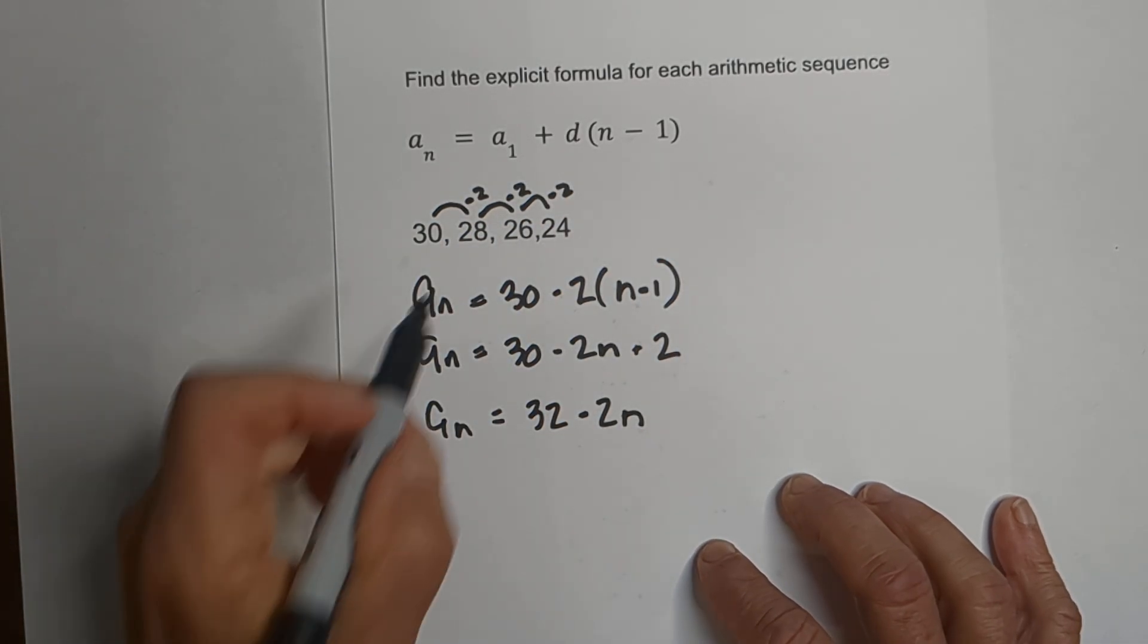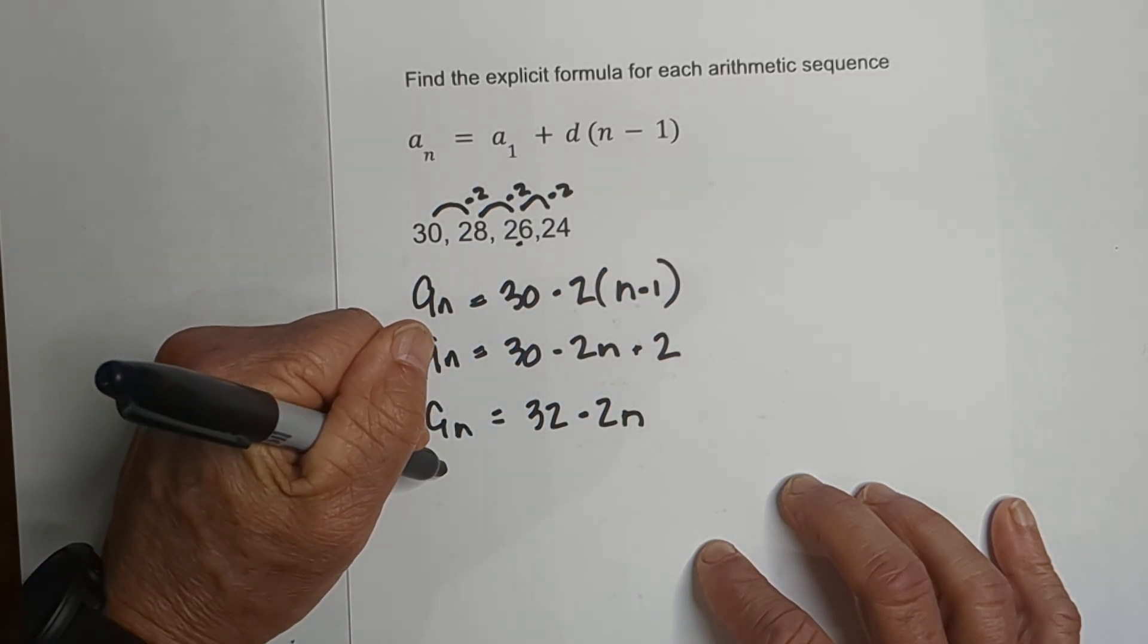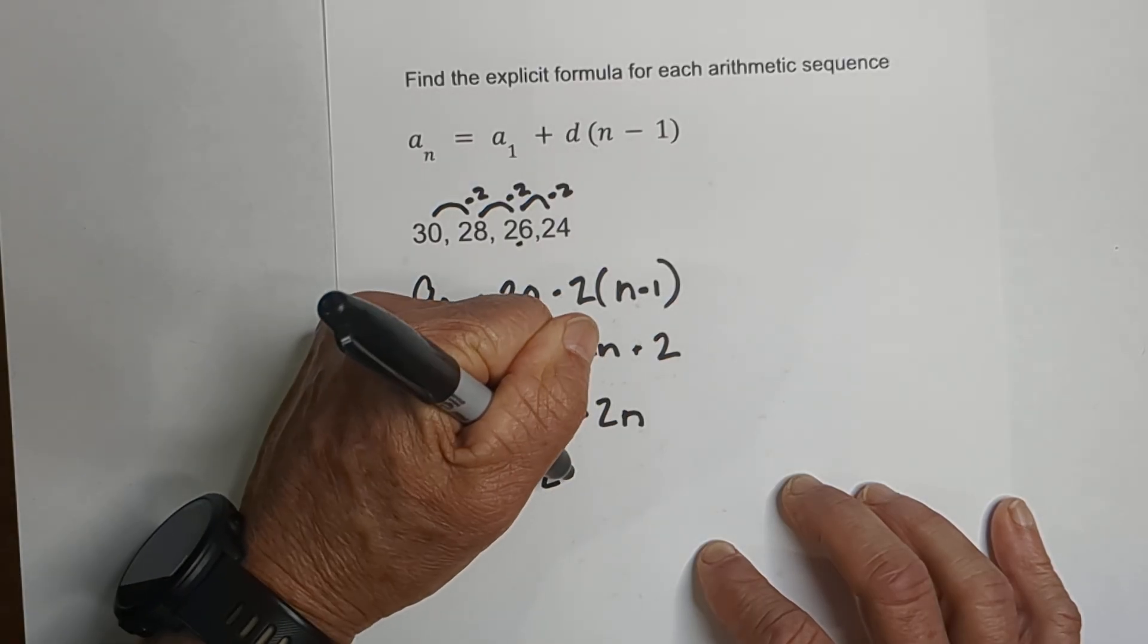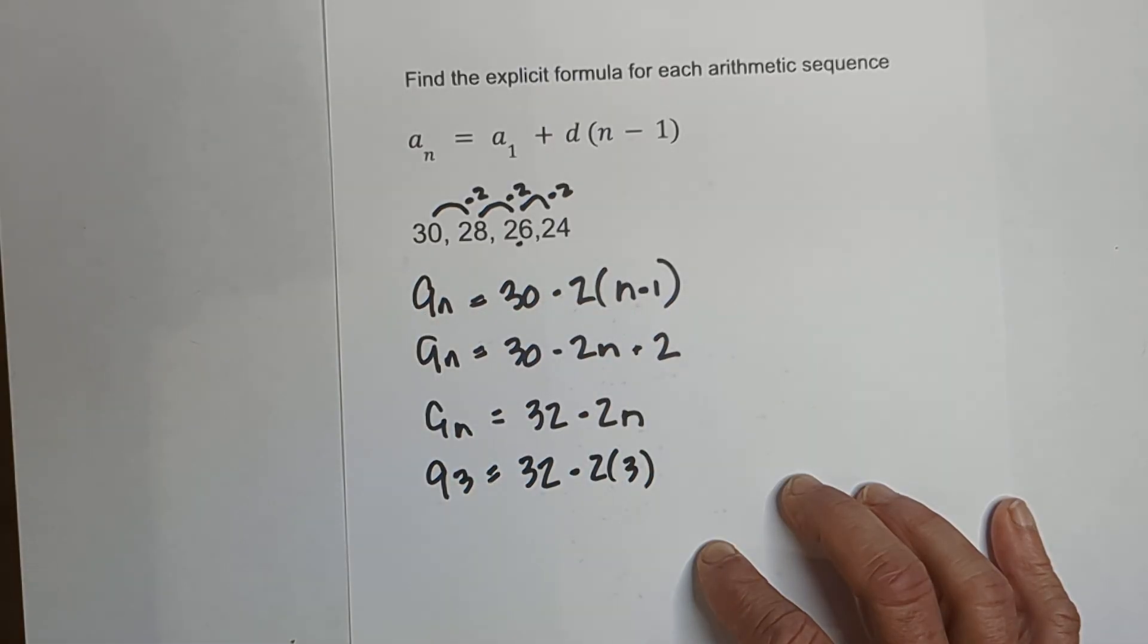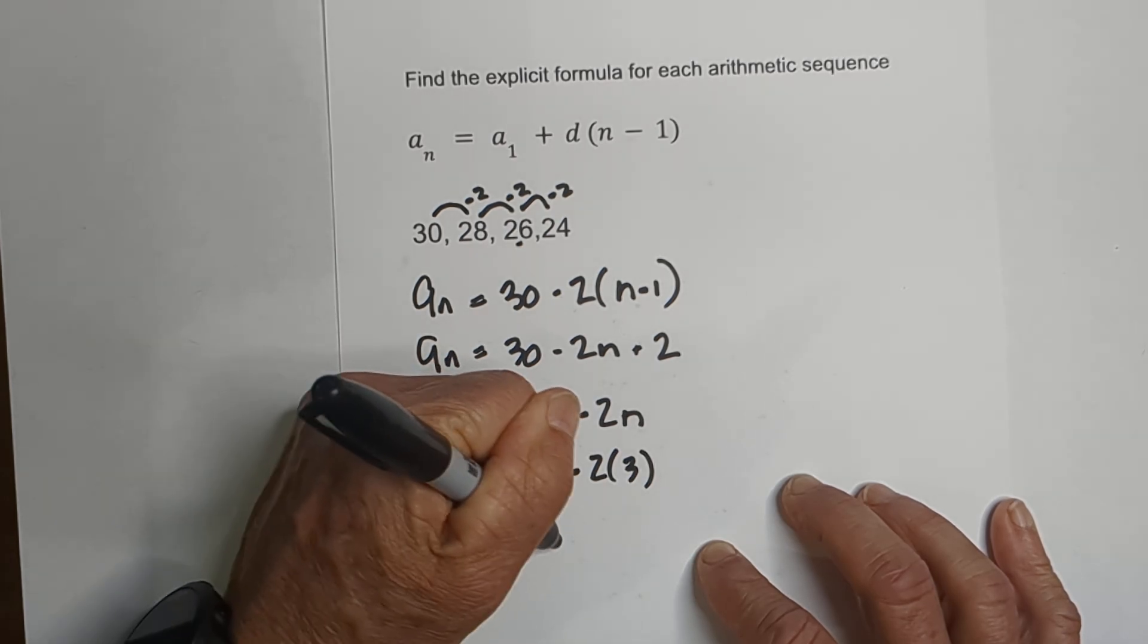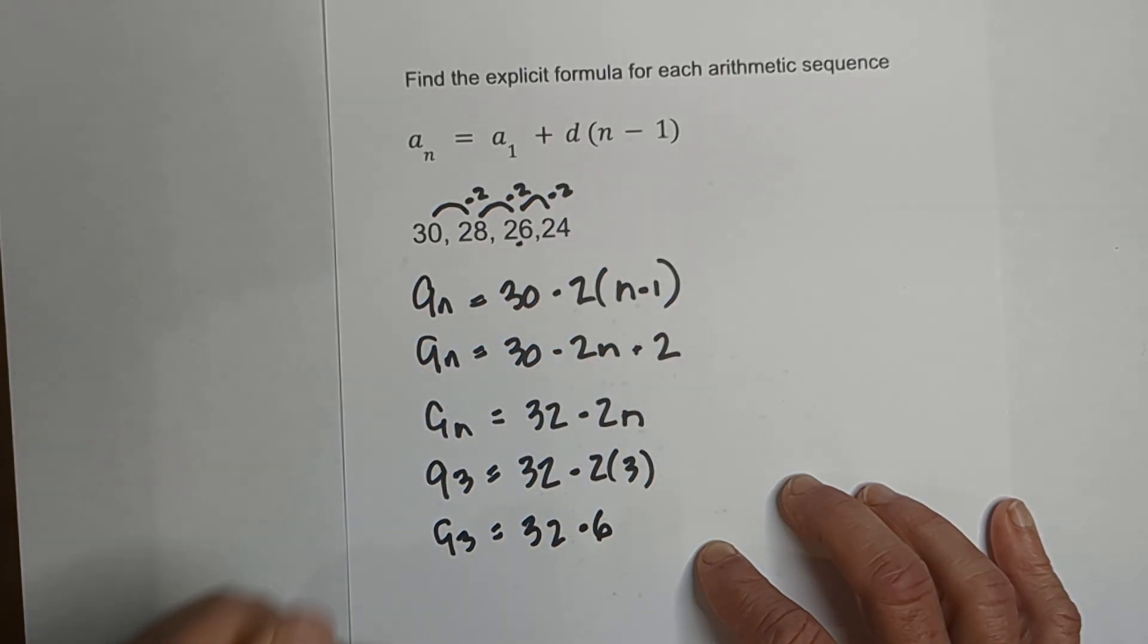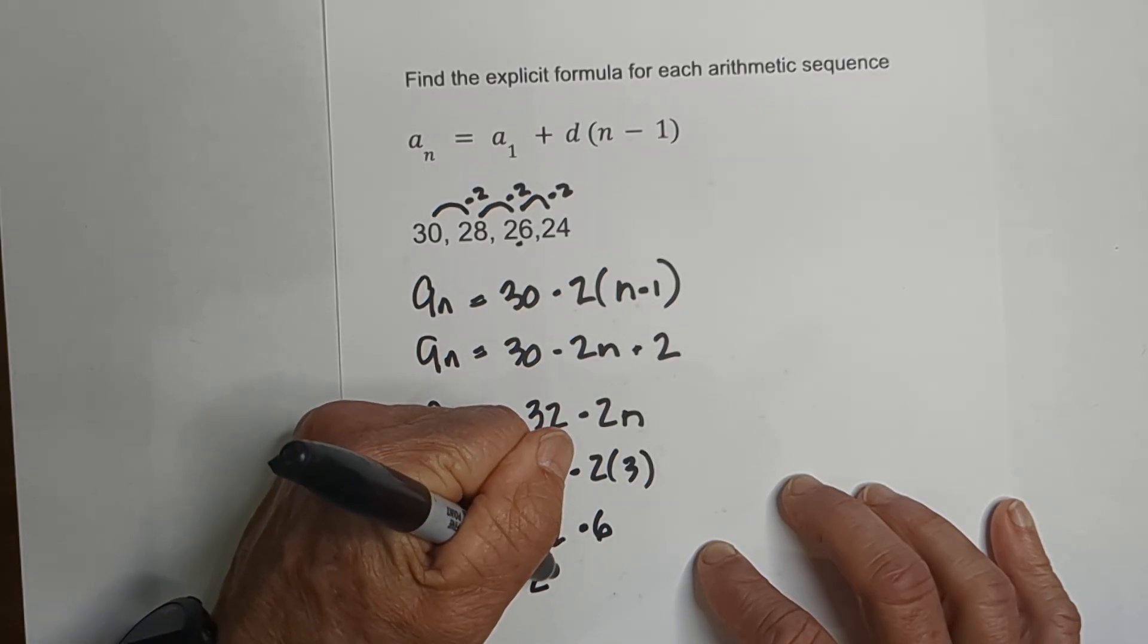Let's check our work again. Let's go ahead and go with the third term. So we're going to go a_3 equals 32 minus 2 times 3 because it's the third term. So that becomes a_3 equals 32 minus 6, and a_3 equals 26.